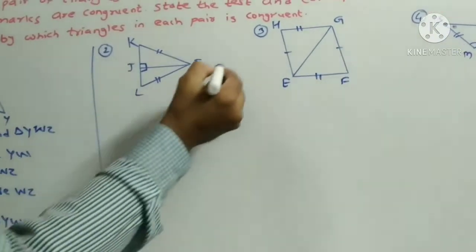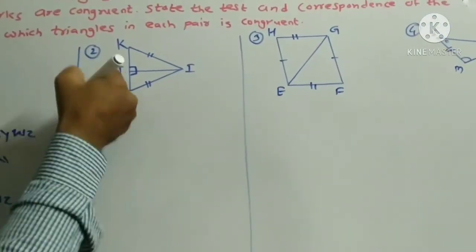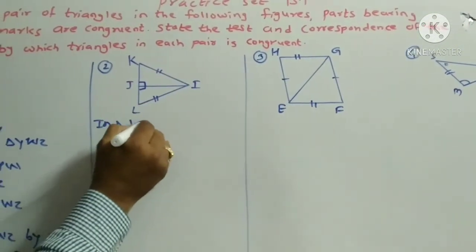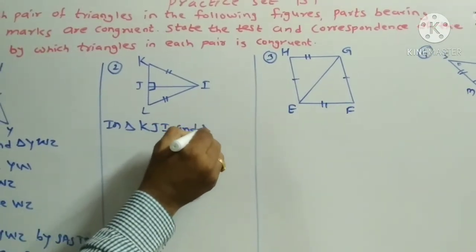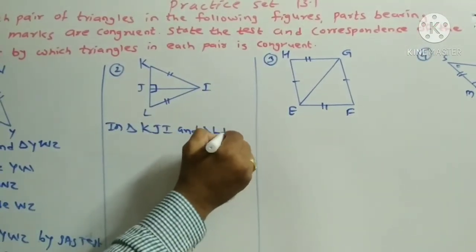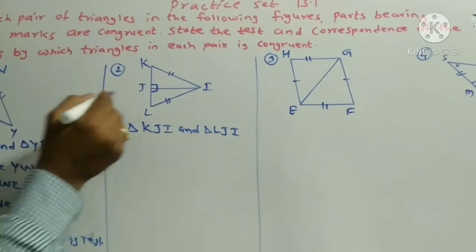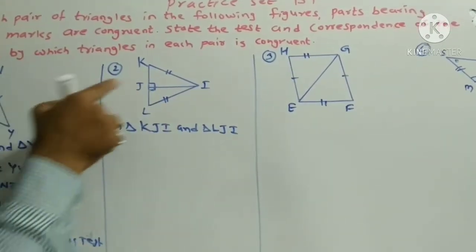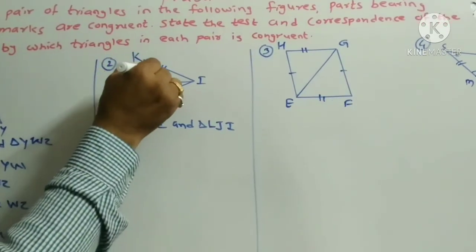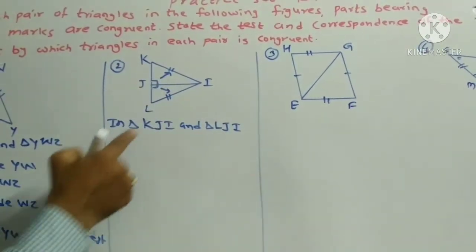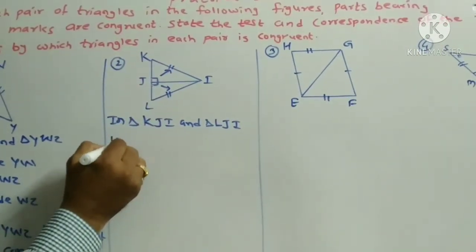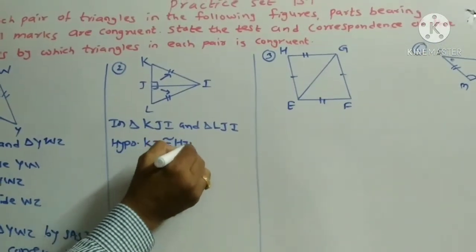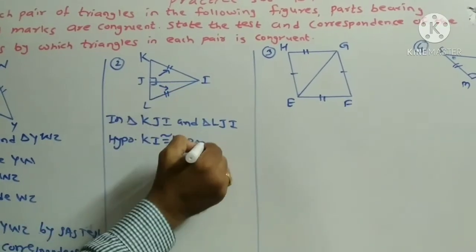The next example is: in triangle KJI and triangle LJI. This is a right angle triangle because both angles are 90 degrees. Therefore, the side opposite to the 90 degree angle is the hypotenuse, and the hypotenuse KI is congruent to hypotenuse LI, as given.